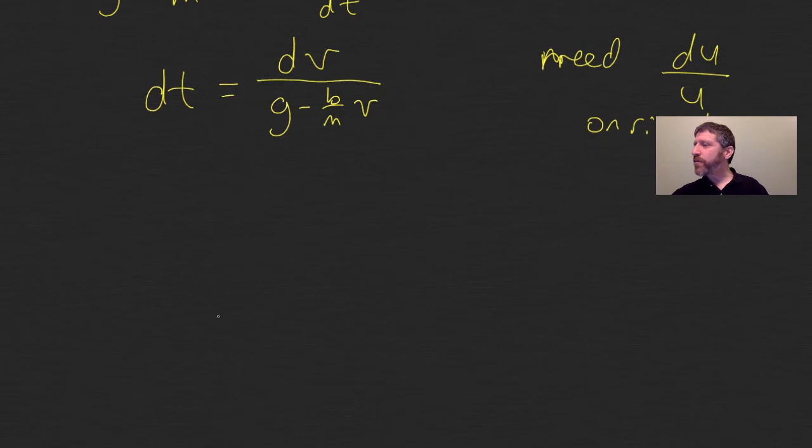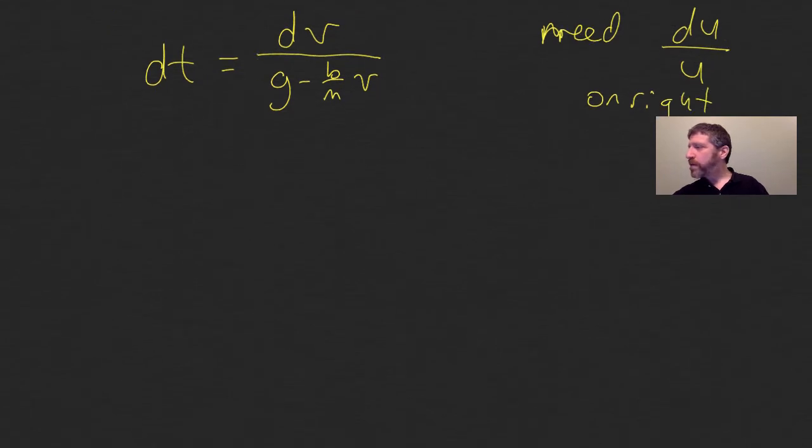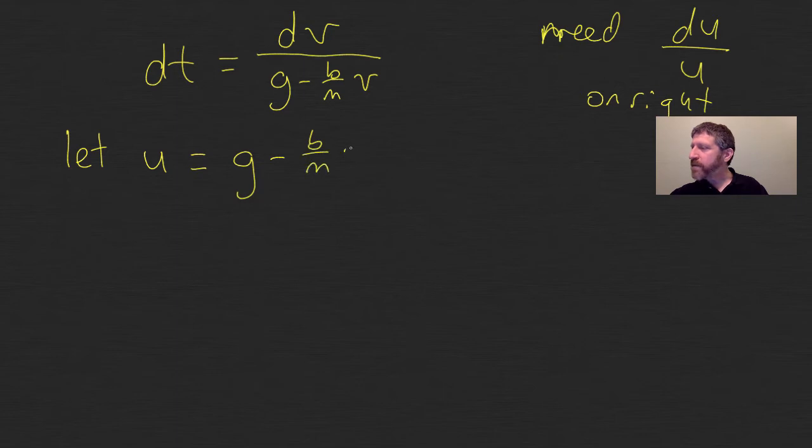I need this to be in the form of du over u. So here's what I'm going to do. I'm going to let u equal this messy expression right here, g minus b over m times v. That is what I'm going to call u. Now I've got to find out what du would look like.